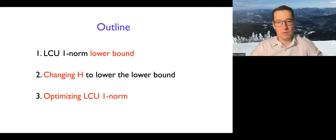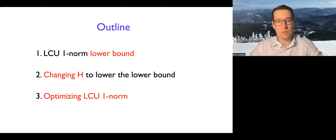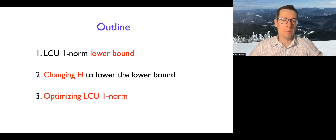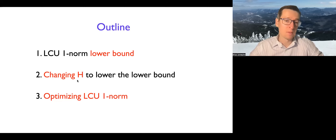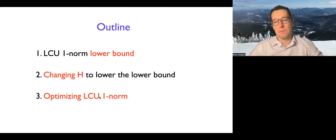Let me outline the main parts of this work. First, we discuss how far one can reduce the LCU one-norm and what the absolute lower bound for this decomposition is — that's useful to know so we can see the limit of reduction. Second, we'll see how to change the Hamiltonian to lower that bound. Third, we optimize LCU by selecting unitaries that ensure the one-norm is lower than naive LCU expansions like linear combination of Paulis.